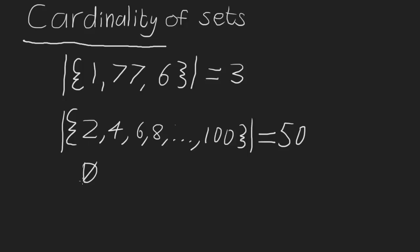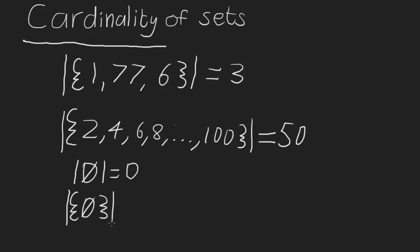What about the empty set? The cardinality of the empty set is 0, because there are no elements in it. What about the set containing the empty set? That set has one element inside — and that one element is the empty set — so the cardinality of that set is 1.